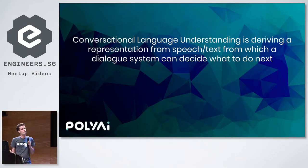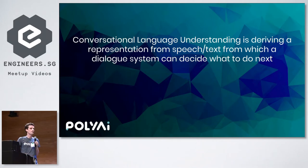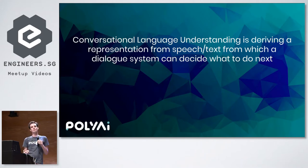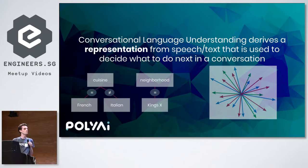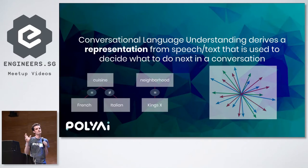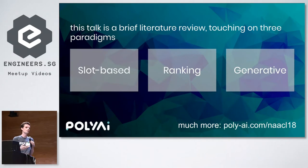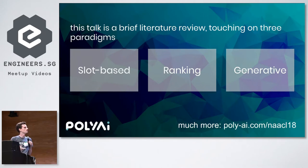I'm now going to go into conversational language understanding — the type of technology that powers these spoken dialogue systems. What is conversational language understanding? For me, it's some method of deriving a representation which is then used by a spoken dialogue system to decide what to say next. That representation could either be some explicit representation, or it could be something like a vector in a vector space — an implicit semantic representation, a hidden layer somewhere in the middle of a neural network trained on a more end-to-end task. I'm going to talk mainly about three paradigms: slot-based systems, ranking systems, and generative models.